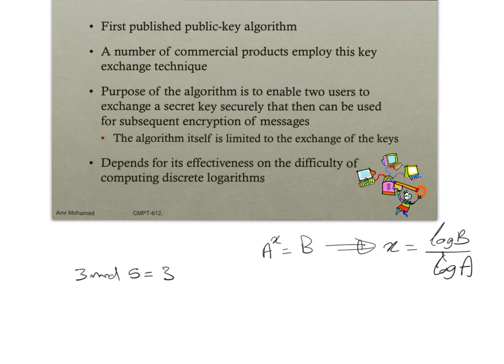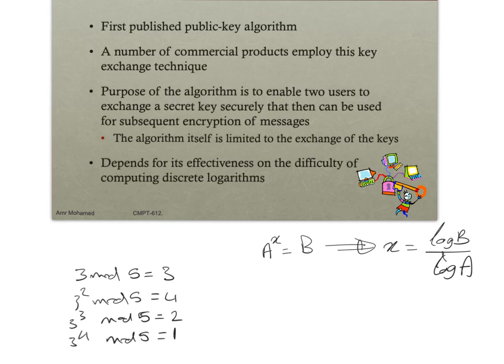3 to the power 2 mod 5 equals 4. 3 to the power 3 mod 5 equals 27 mod 5, which is 2. 3 to the power 4 mod 5: 3 to the power 4 is 81, and 81 mod 5 is 1.